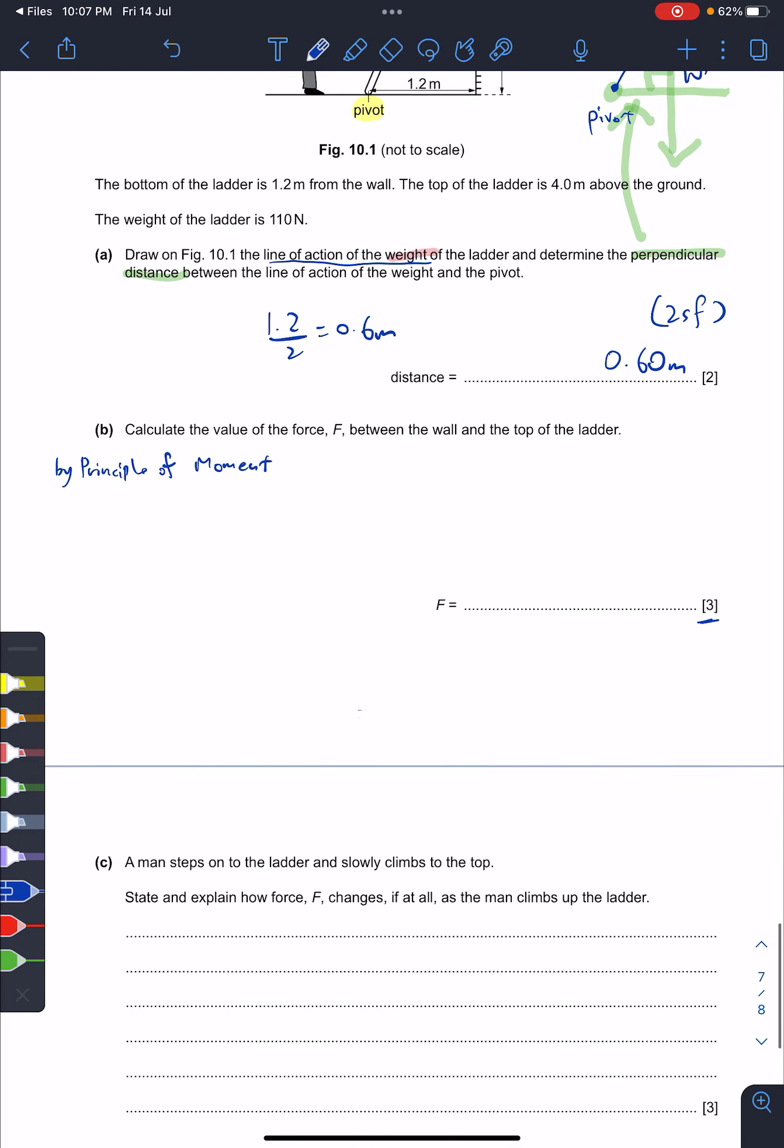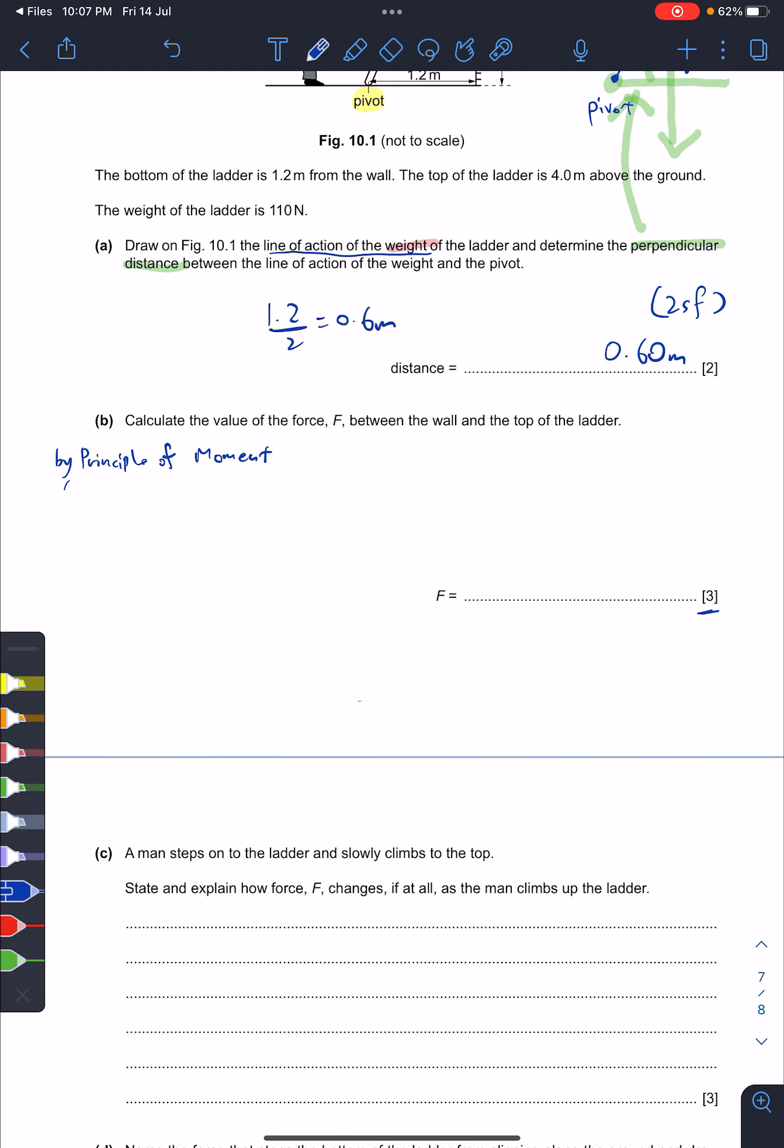Can they test you on the definition of principle of moments? Yes. The principle of moments says that essentially when an object is in equilibrium - equilibrium means it's not moving up, down, or rotating whatsoever - the total anti-clockwise moment is the same as the total clockwise moment. They are the same so they can cancel out, and all this is about the same pivot.